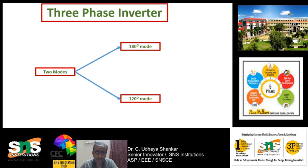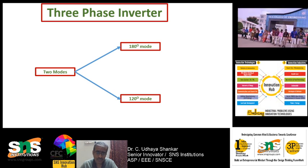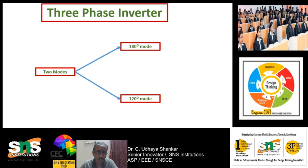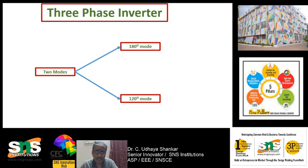A three-phase inverter has higher power capability. It is used in high-power industries in order to produce high torque and to handle high-power machines. The three-phase inverter converts the given DC input voltage — which may come from a battery, solar power station, or similar source — to a three-phase AC output.